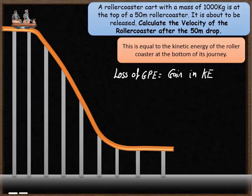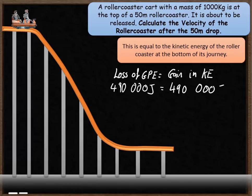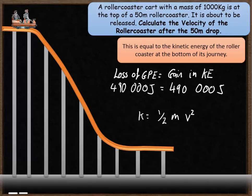The loss of gravitational potential energy as the roller coaster falls is equal to its gain in kinetic energy. So it's going to lose 490,000 joules of gravitational potential energy, which means it's going to gain 490,000 joules of kinetic energy. Kinetic energy can be calculated using the formula half times mass times velocity squared. The formula includes velocity, so if we know the kinetic energy and the mass we can work out the velocity. The kinetic energy of the car when it reaches the bottom is 490,000 joules.